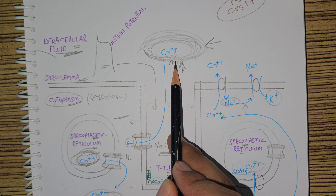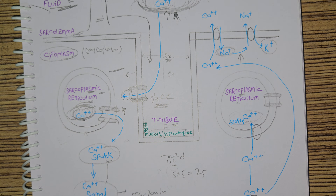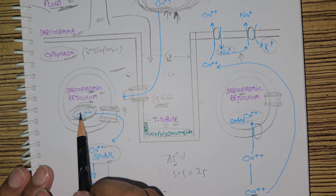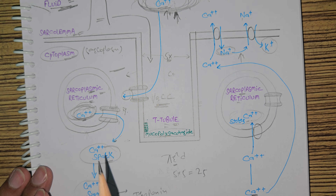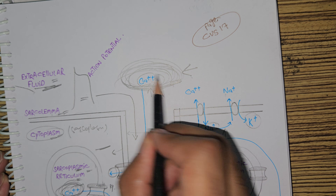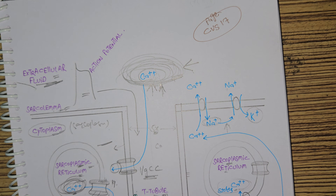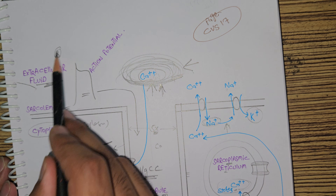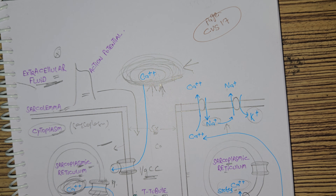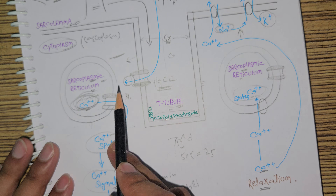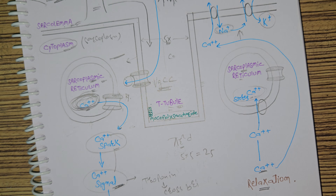This extracellular calcium is very important for the contraction of the cardiac muscle cell because the sarcoplasmic reticulum is not very well developed in cardiac muscle — so very little calcium is available from the sarcoplasmic reticulum, and the majority of calcium comes from the extracellular fluid. If we place a heart in a calcium-free medium — meaning no calcium in the extracellular fluid — the heart will soon stop beating.